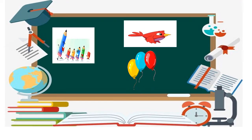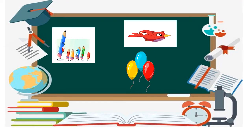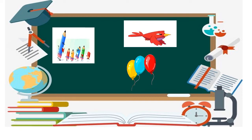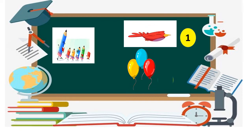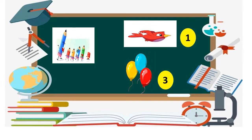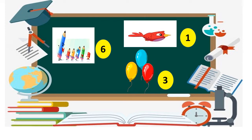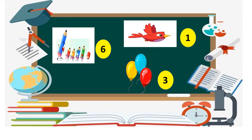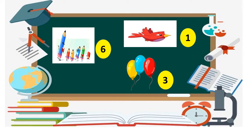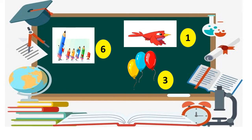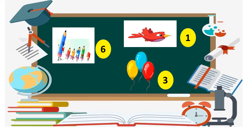How do we count things? We count things using numbers. Here I have one bird, three balloons and six pencils. So we use numbers such as one, three and six and so on to count the things.